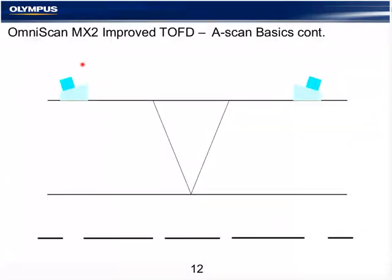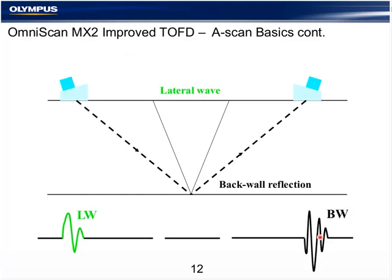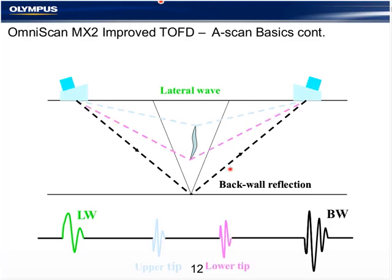The A-scan basics require a transmitter probe and a receiver probe in a pitch-catch configuration. The signal traveling on the surface directly between the two exit points is called the lateral wave — it has a positive, negative, positive phase. The back wall signal is out of phase with the lateral wave: negative, positive, negative. Any flaw showing up between the lateral wave and back wall can be measured very accurately for depth, height, and length. The tip diffracted signal is out of phase with the lateral wave, and the bottom tip being out of phase with the upper tip tells us this is a continuous flaw.